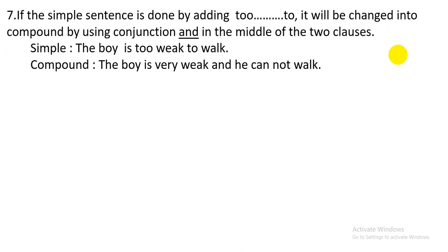Serial number seven: if the simple sentence is done by adding 'too...to', it will be changed into a compound sentence by using conjunction 'and' in the middle of the two clauses. Simple sentence: 'The boy is too weak to work.' Here you use 'very' in place of 'too', then use 'and' after the adjective 'weak'. For the second clause, use the subject again, then 'cannot' or 'could not' plus the verb according to tense. The compound sentence is: 'The boy is very weak and he cannot work.'